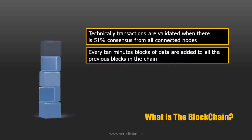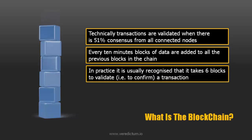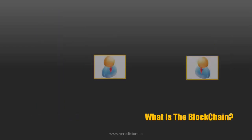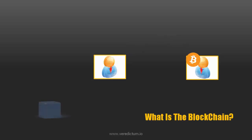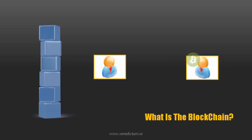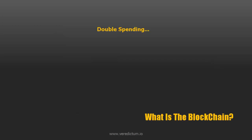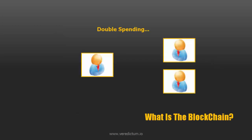This usually happens every 10 minutes. In practice, it's actually recognised that it takes six blocks to validate a transaction formally — that's usually about an hour. So if someone transferred 100 Bitcoin from one person to another, they would typically wait for six completed blocks to be validated to confirm that the payment is legitimate and has been received. The reason behind this one hour delay before a transaction is recognised as valid is because of what is known as double spending.